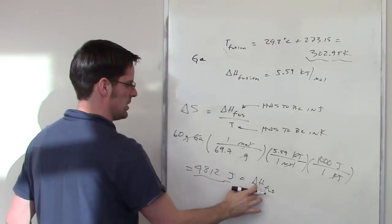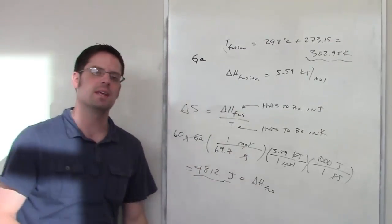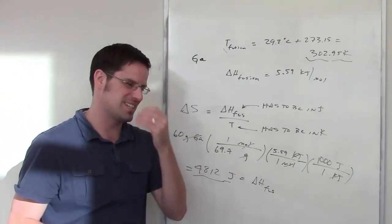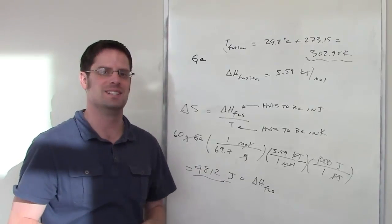My delta H fusion is this in joules. It goes in the numerator. I throw those numbers in there and that should give us the delta S for fusion for this amount of gallium.